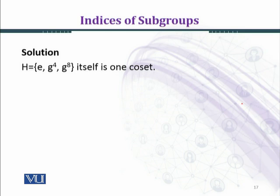H is the subgroup itself. This is one right coset — which is also a left coset — because if we multiply H with the identity element E, or if we multiply H with element G raised to power 4, which is contained in H, we shall get the coset H in this manner.